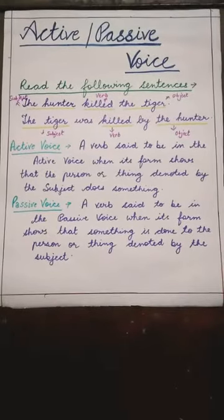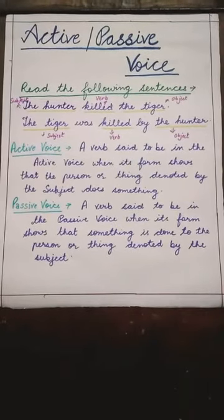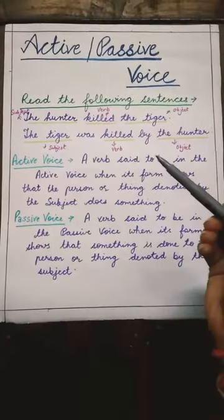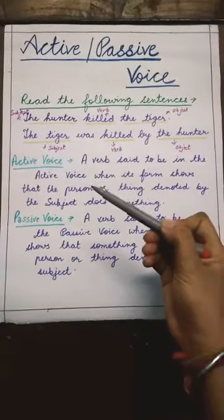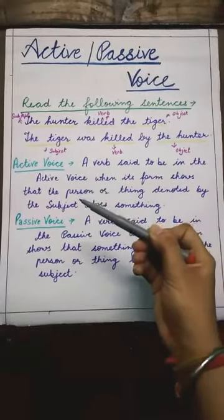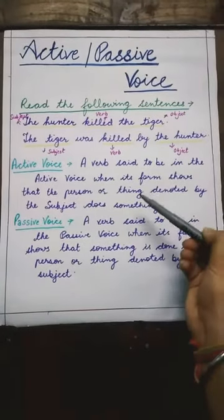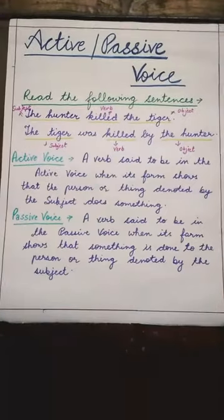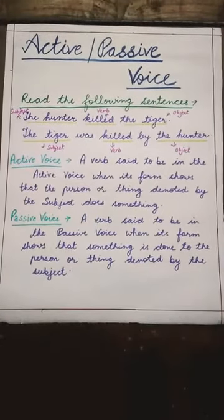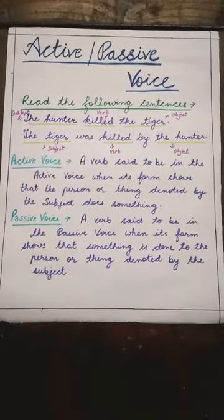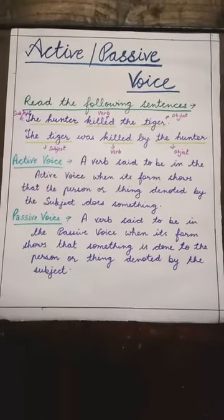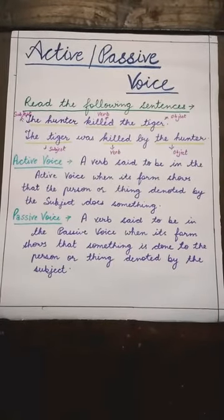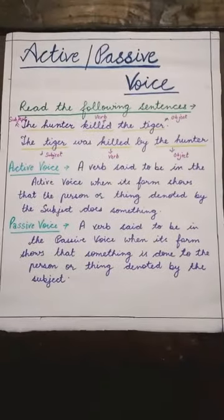First of all we will read about what is active voice and passive voice. A verb is said to be in the active voice when its form shows that the person or thing denoted by the subject does something. It means verb को active voice में तब माना जाता है जब उसकी form show करती है कि जो subject की place पे person और thing हैं उन्होंने कोई action perform करा है.